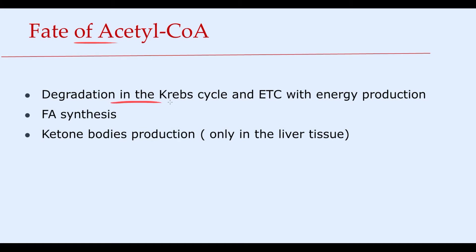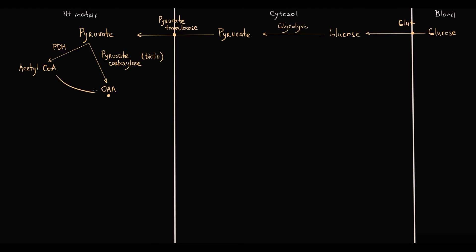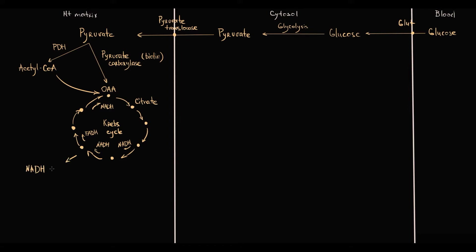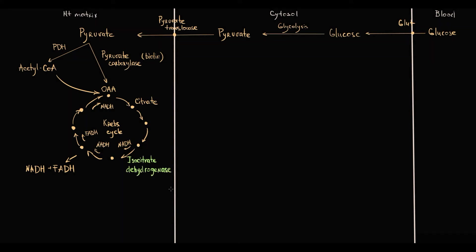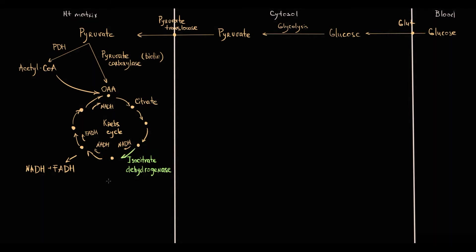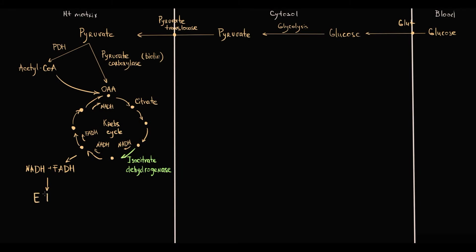In most tissues, acetyl-CoA in the mitochondria can be utilized by two pathways. First, acetyl-CoA can be degraded in the Krebs cycle and subsequently in the electron transfer chain with energy production. Second, acetyl-CoA can be used for fatty acid synthesis. Only in the liver can acetyl-CoA also be used for ketone body production. Acetyl-CoA binds to oxaloacetate forming citrate, which goes through the Krebs cycle where dehydrogenases extract electrons, producing NADH and FADH₂. A key regulatory enzyme here is isocitrate dehydrogenase, which also regulates fatty acid synthesis.